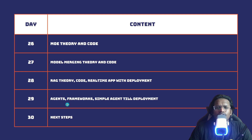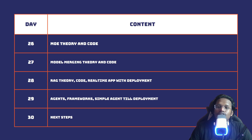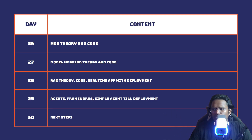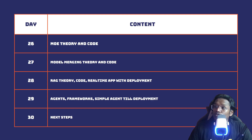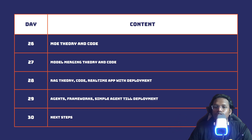Day twenty-nine covers agents: what frameworks are available, how agents work, the types of agents, and building a simple agent we'll deploy so you understand how it works. Monitoring is also covered there. Day thirty will cover the next steps for you and what to do after the course — that's the conclusion.